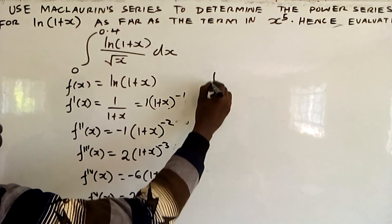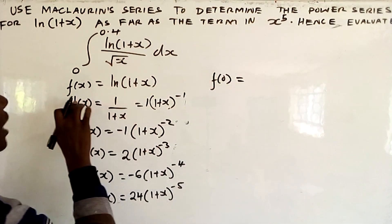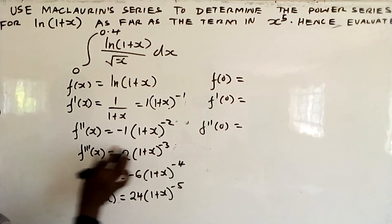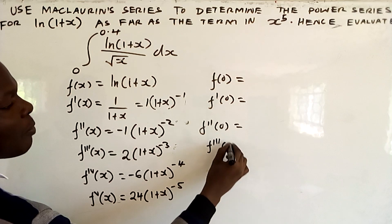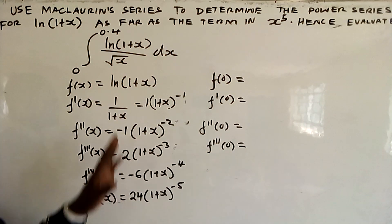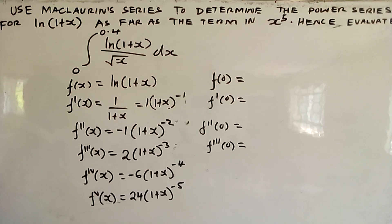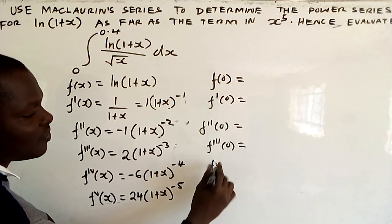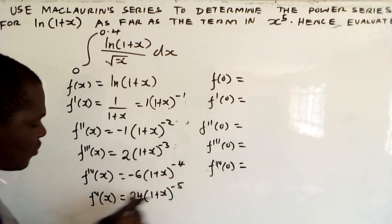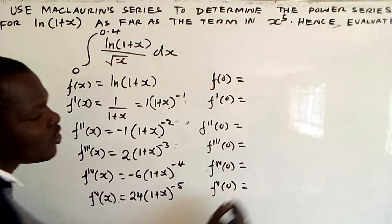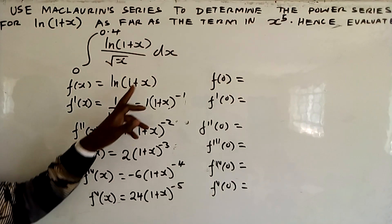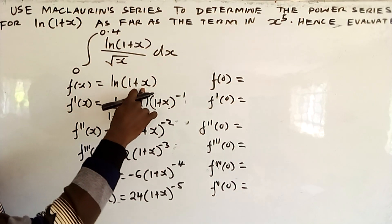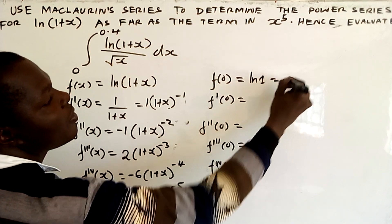Now we want the f(0) values. We get f(0) = ln(1+0) = ln(1), which is 0. Then f'(0): putting x=0 into (1+x)^(-1) gives 1. So f'(0) = 1.